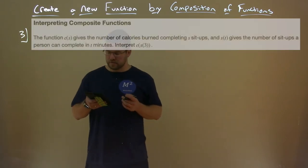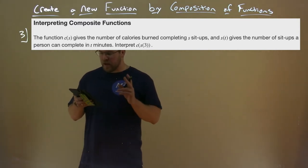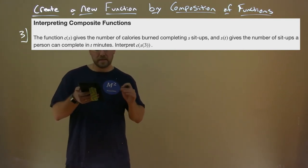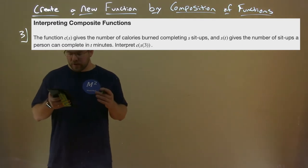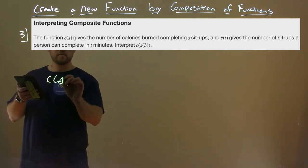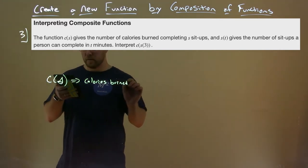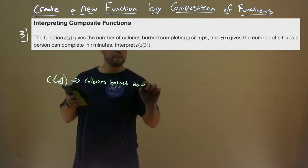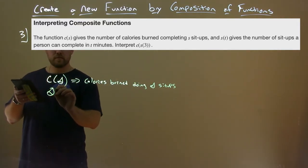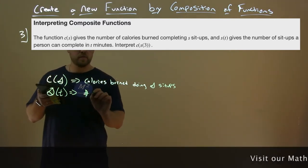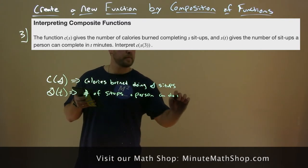Now we want to interpret composite functions. We're given: the function c of s gives the number of calories burned completing s sit-ups, and s of t gives the number of sit-ups a person can complete in t minutes. So, c of s is calories burned doing s sit-ups, and s of t is the number of sit-ups a person can do in t minutes.